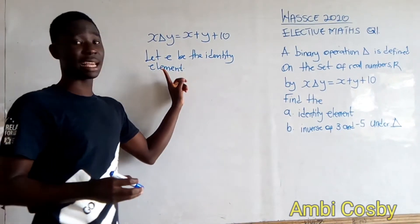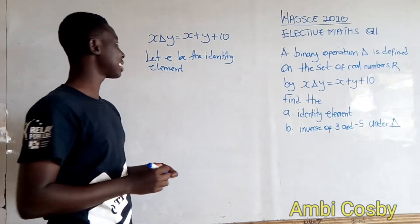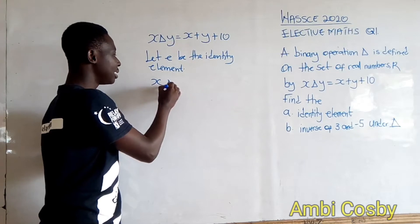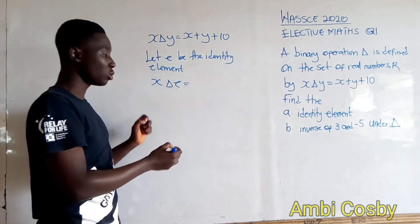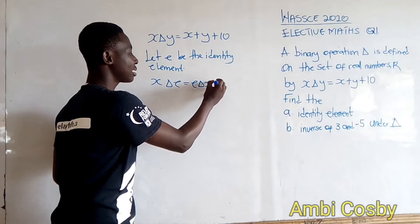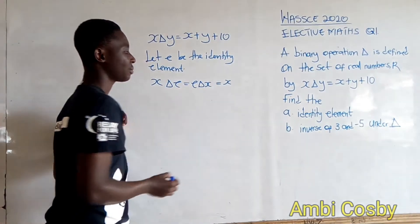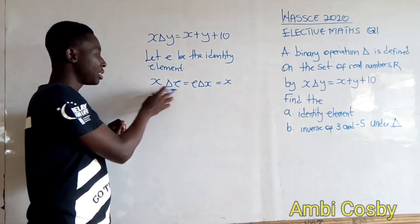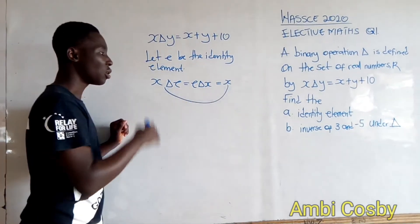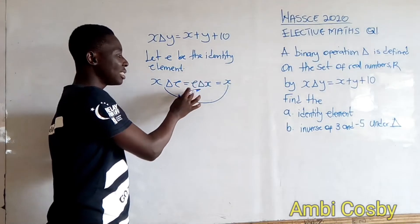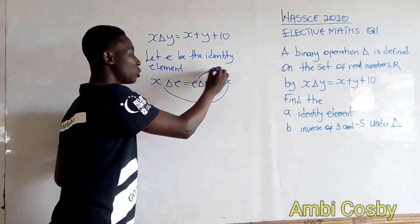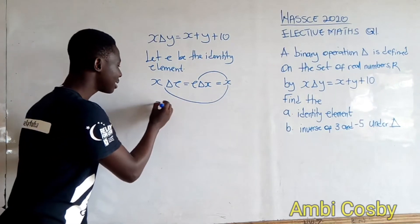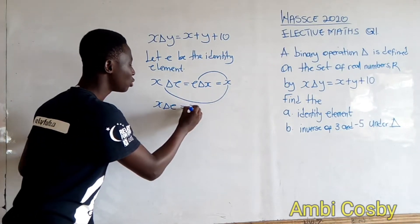If e is the identity element, then it follows that x ∗ e = e ∗ x = x. You can match x ∗ e to this or equate e ∗ x — either side is correct. I'm going to use x ∗ e = x.